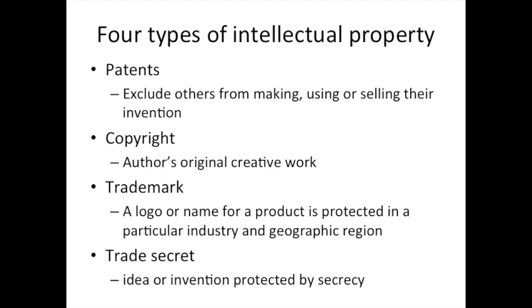There are four main types of intellectual property. Patents, copyright, and trademark are public registrations with the government that give you a limited monopoly on an idea or creative work. Trade secrets are protected by law but do not require registration. Each of these protects a different type of work.